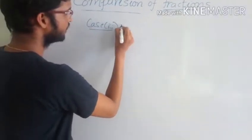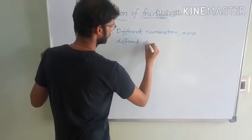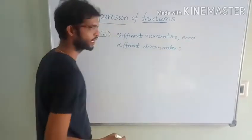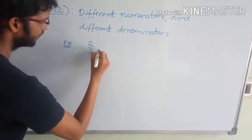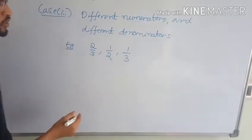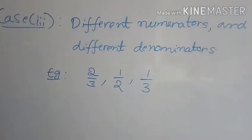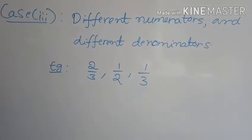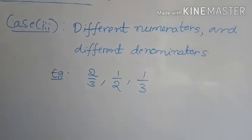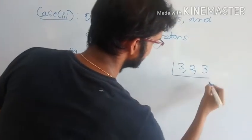In Case 3: different numerators and different denominators. For example, 2 by 3, 1 by 2, and 1 by 3. Among these three fractions, find which is greater and which is smaller. The first step is to make all denominators equal using the LCM method. The denominators are 3, 2, and 3.